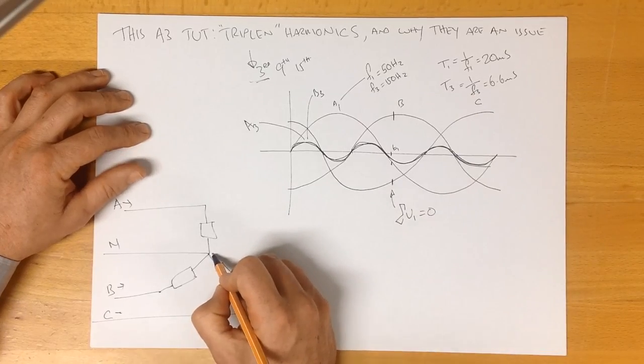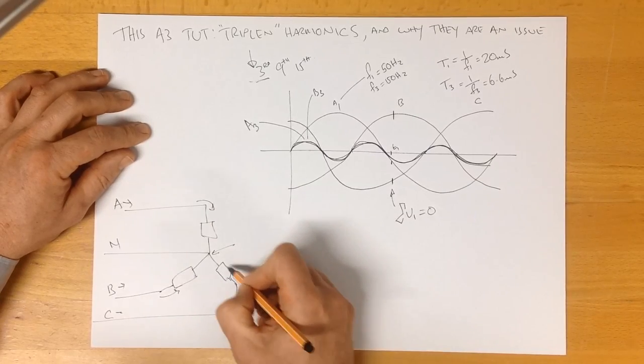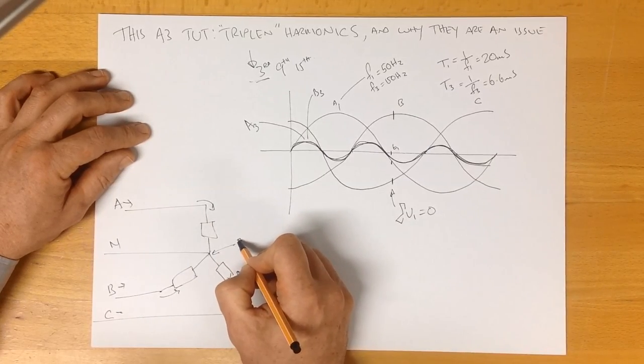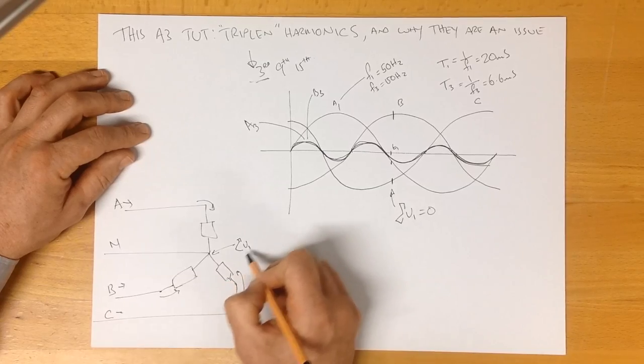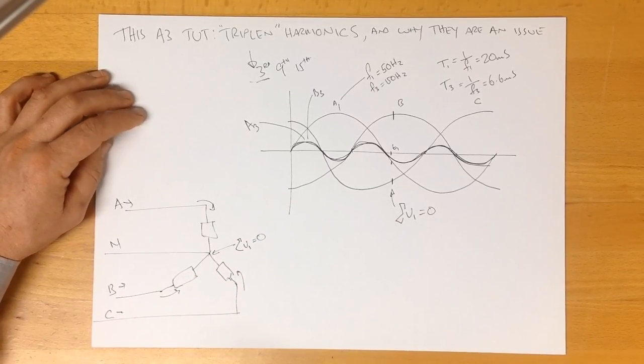And so therefore, at this point here, where we've got all these voltages coming in, the sum of our fundamental voltages all equals zero if our system is perfectly balanced.